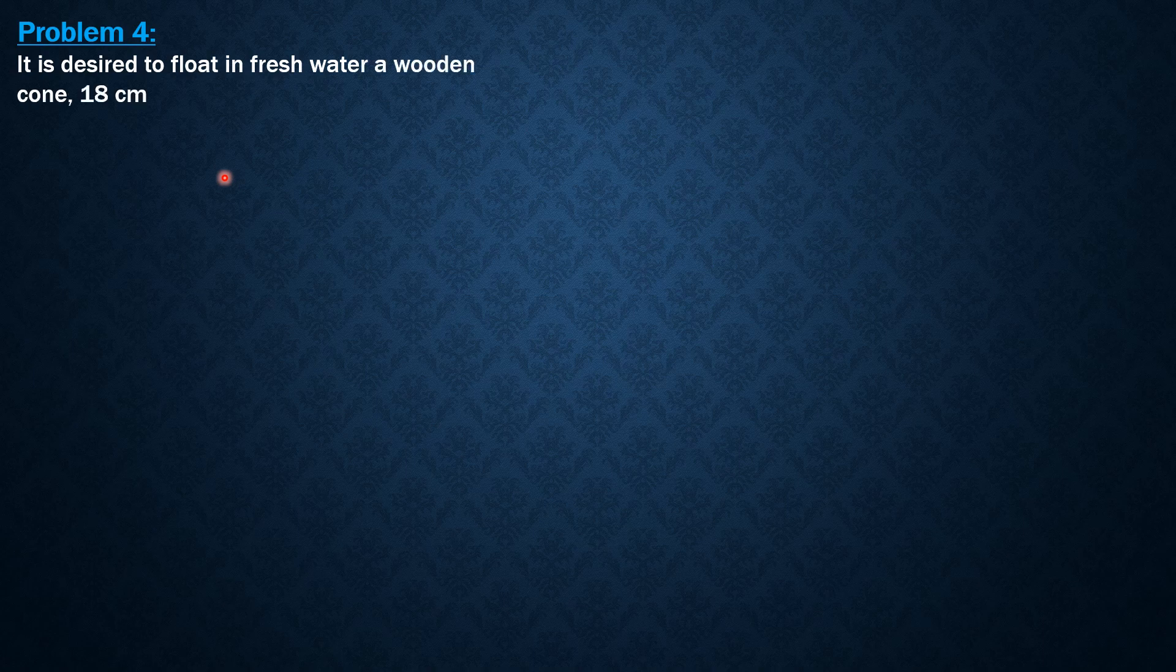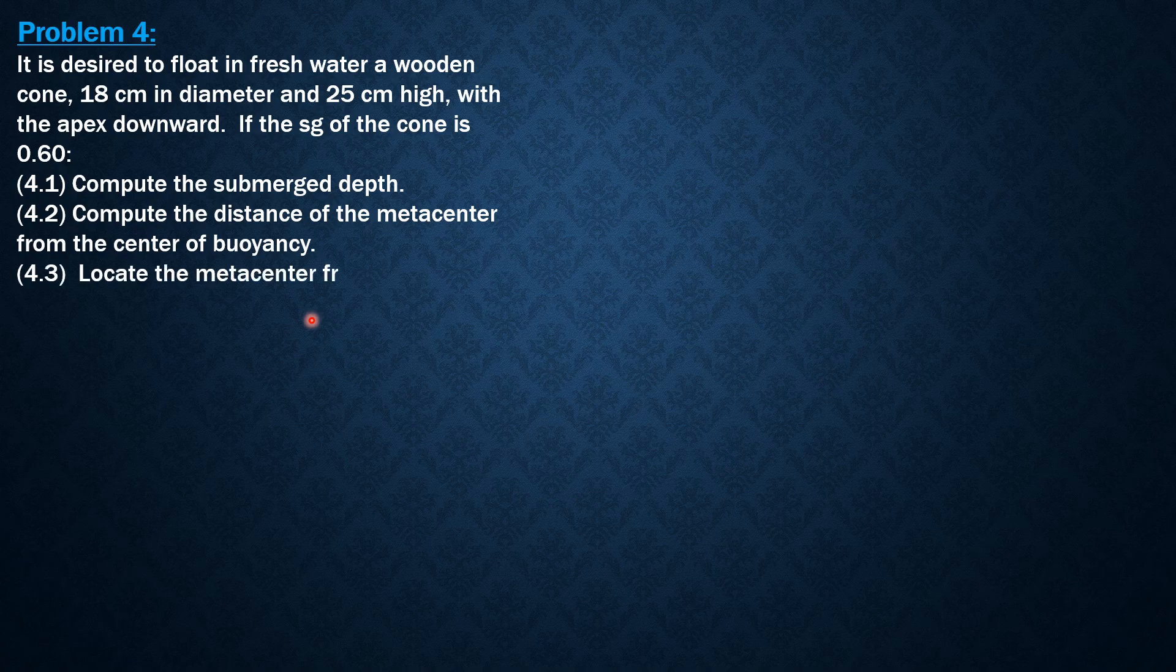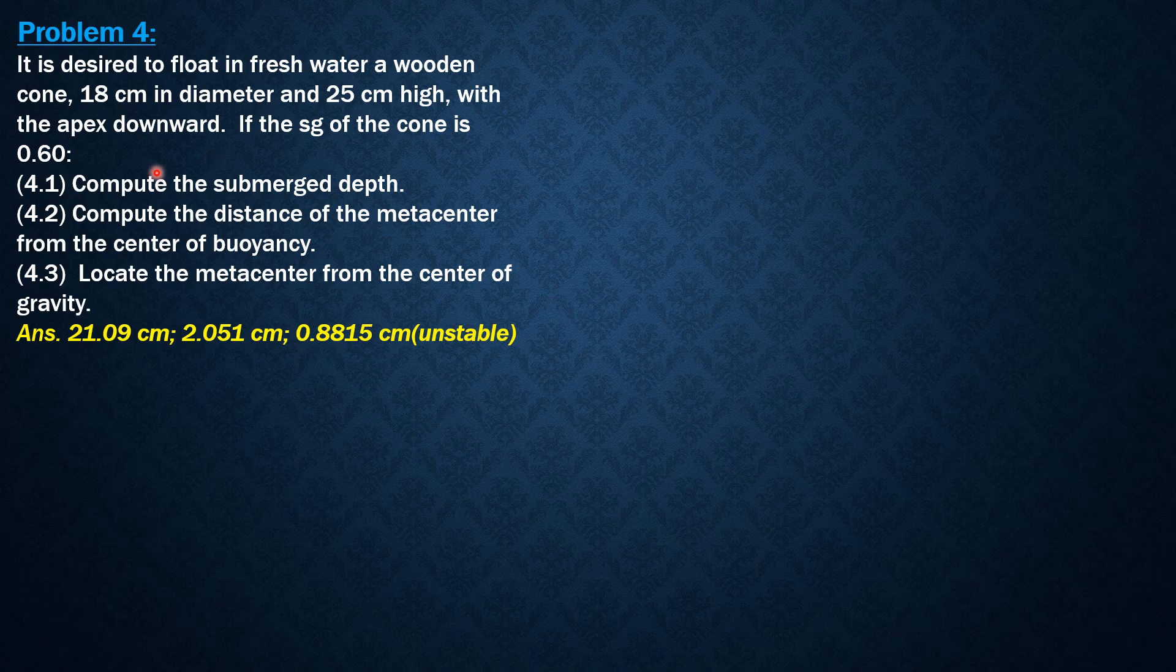This is a non-prismatic or non-rectangular floating body. It is desired to float in fresh water a wooden cone 18 cm in diameter and 25 cm high with the apex downward. If the specific gravity of the cone is 0.6,